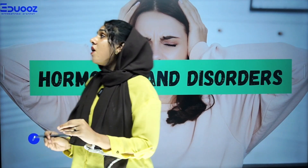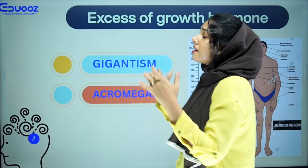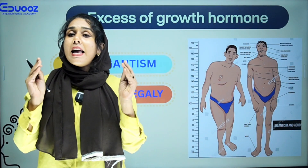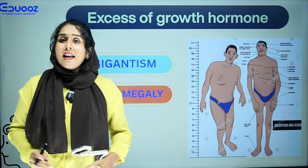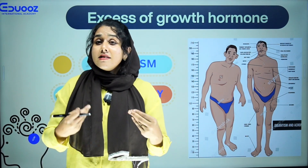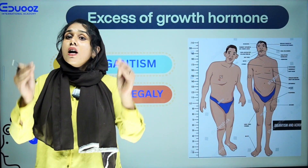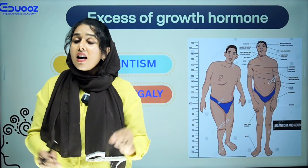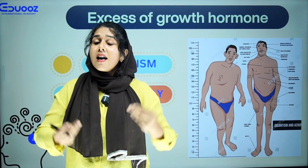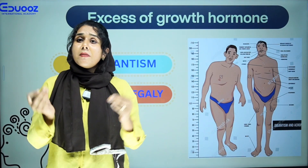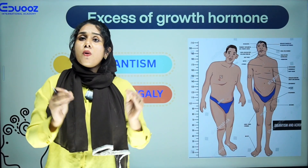First of all, we started to learn how hormones relate to growth and metabolism. We will explore our top list of hormones. We start with the growth hormone, which is secreted by the anterior pituitary, and it helps the body with cell growth and reproduction.